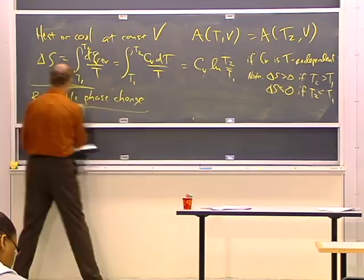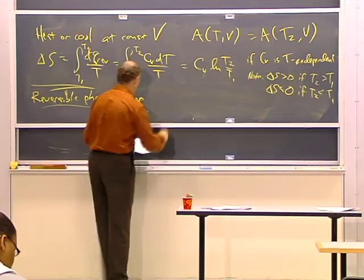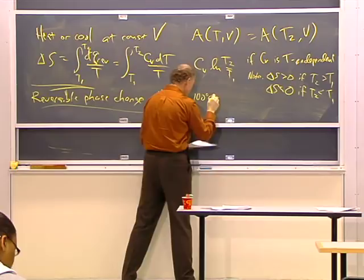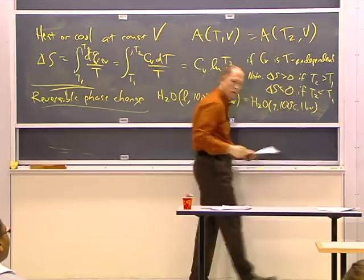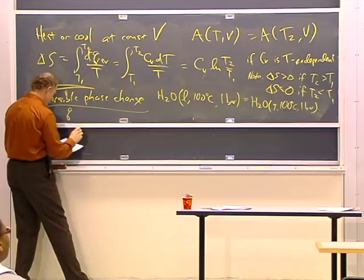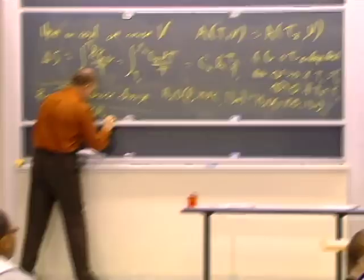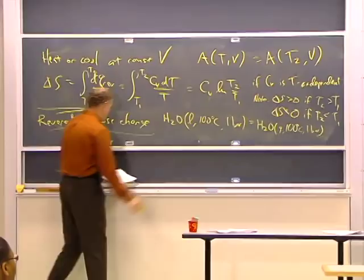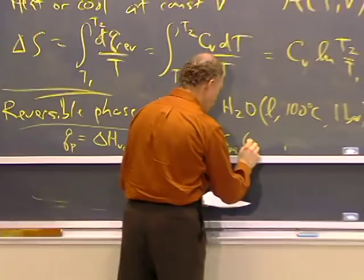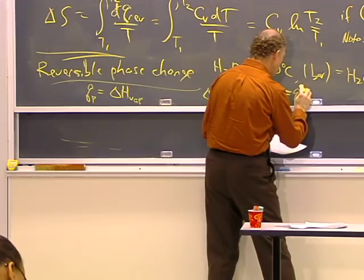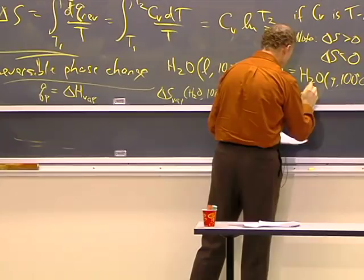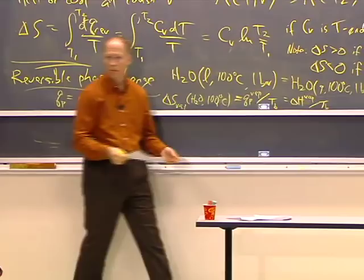For a reversible phase change: take H2O liquid at 100°C and 1 bar going to water vapor at 100°C and 1 bar. The heat is just delta H of vaporization at constant pressure. So delta S of vaporization for H2O at 100°C is just Q_vaporization over the boiling temperature, which is delta H_vaporization over the boiling temperature. That was easy.